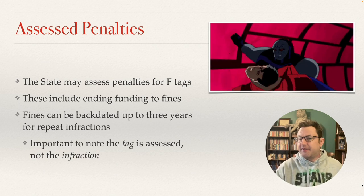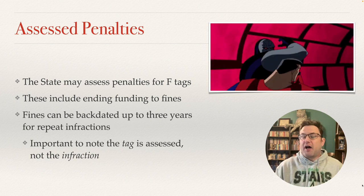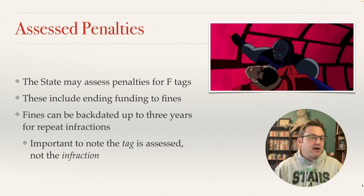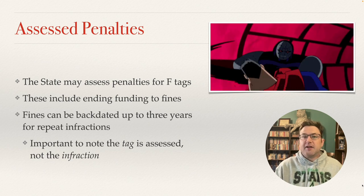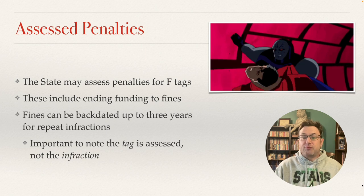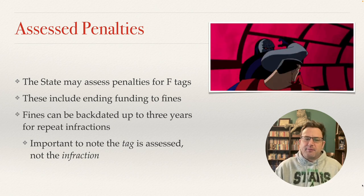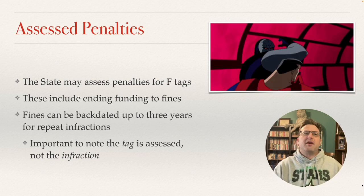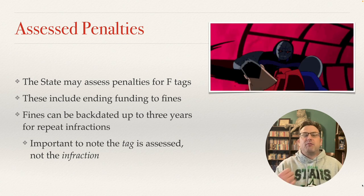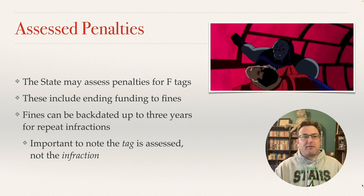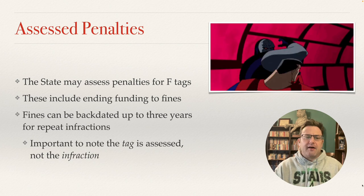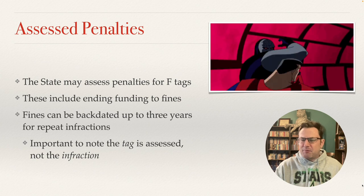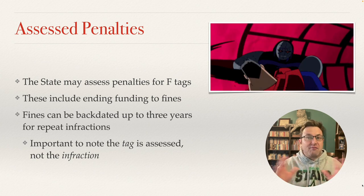The argument behind backdating: if you had a sanitation tag — an F812 — and surveyors found it on three separate occasions, the argument is that you clearly haven't taken it seriously, so they penalize you back to when it began. It's important to note that the tag is assessed, not the specific infraction. So you can get a sanitation tag for different things — maybe one time someone forgot to wear a hairnet, another time trash can lids were missing, and a third time food wasn't dated properly. Those are three separate issues, but the argument is that the kitchen hasn't run in a sanitary manner for those three years. This happens a lot for sanitation tags and infection control, as both are very broad topics.